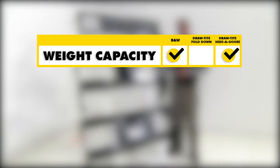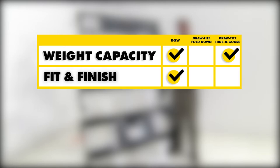To sum everything up, as far as weight capacity goes I have to give it to our under bed kits, the B&W and the Drawtite Hide-a-Goose, because of the 30,000 gross trailer weight rating and the 7,500 pound vertical load limit. Now as far as fit and finish goes, I think I'm going to give it to the B&W because experience with installing all three of these kits, it does fit very nicely and it gives you that nice clean look in the bed.